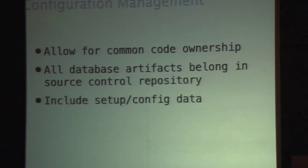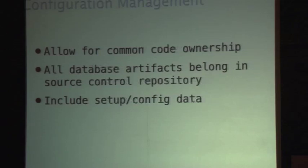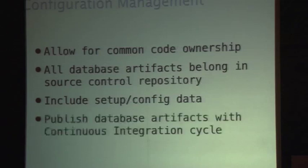You also want to include setup and config data — like a lot of people have products lists, list of states, list of address types, all this kind of stuff. This is all config data and you should version control it, because if it changes, you need to know who changed it, why it changed, and what the difference was. That is important to include in version control.